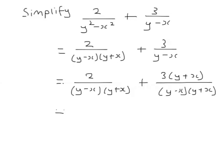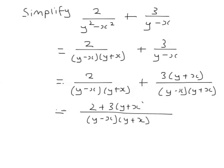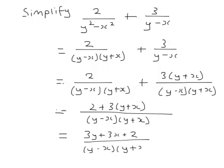So now the denominators are the same. We can simply add the numerators. So it's 2 plus 3y plus x, which is 3y plus 3x plus 2 over y minus x, y plus x. And now that is simplified.